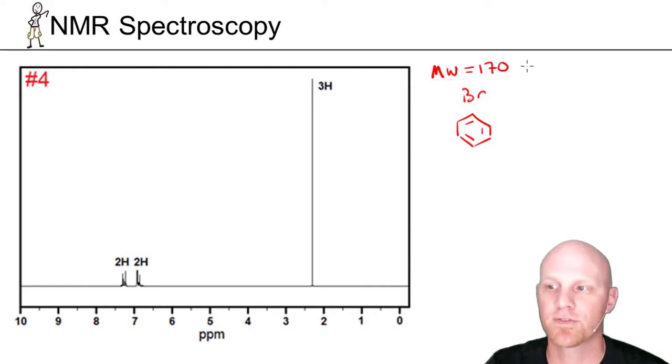We already know the molecular weight is 170 and there's a bromine from the mass spec, and we have a benzene ring both from the IR and the carbon-13 NMR. If we still weren't sure, the H-NMR here is going to confirm it. In the aromatic region between 6½ and 8½, we've got some signals, so we definitely have a benzene ring. We also have one signal down here in the alkane region.